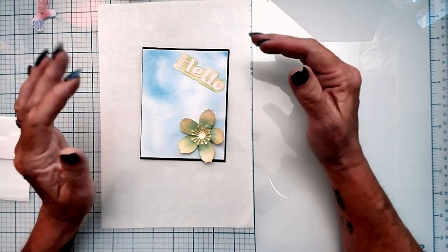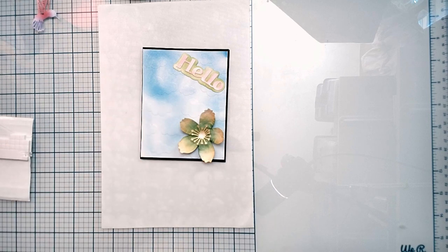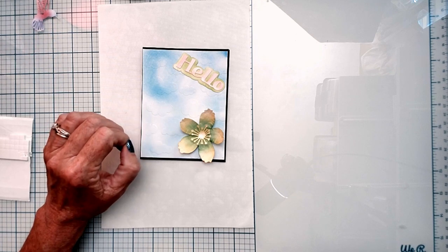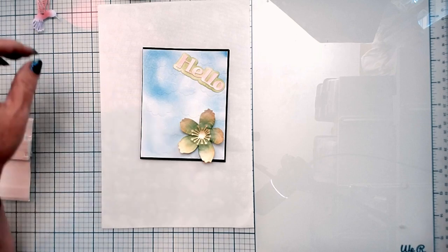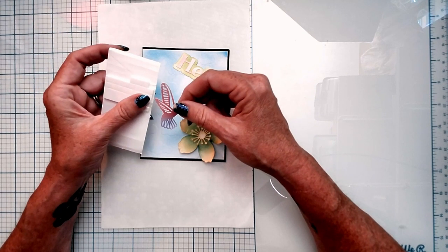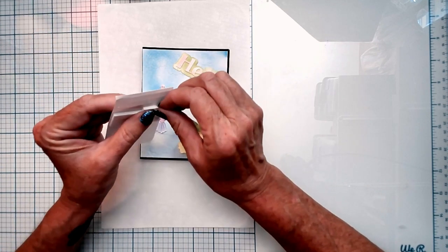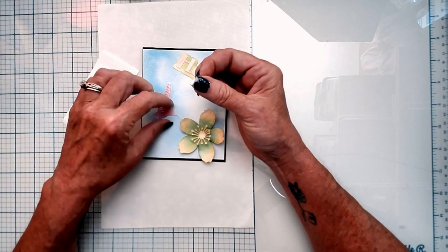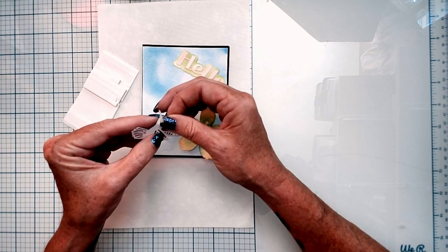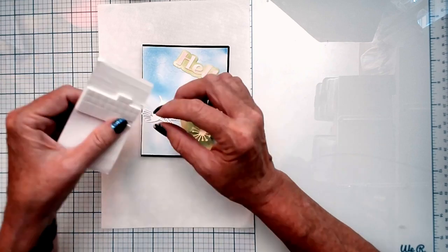So we put the hello on there. I put mine on the angle. It's your preference on how you would like to put your sentiment. The next thing that we're going to do is add our hummingbird. Instead of gluing the hummingbird down, I'm going to make it stand up a little bit with square foam squares.